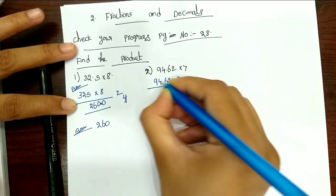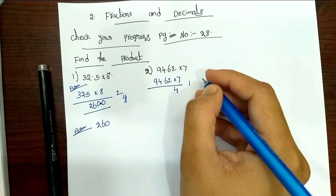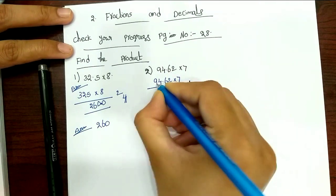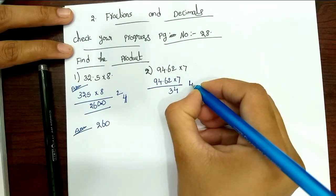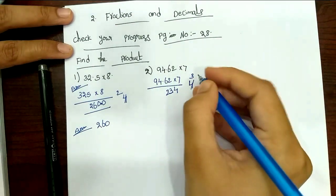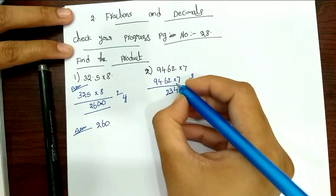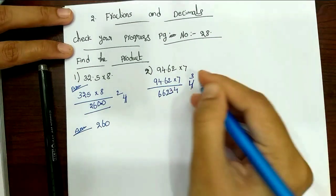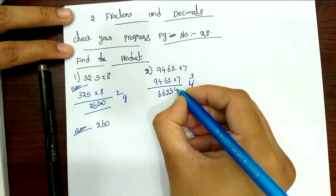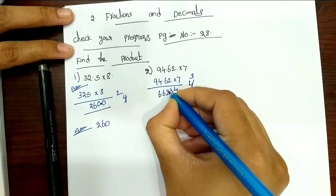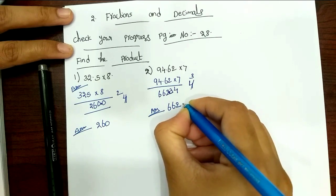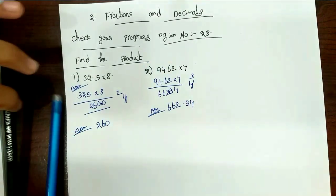7 times 2 is 14. 76.42, 42 plus 1 is 43. Next, 4 times 7 is 28, 28 plus 4 is 32. Next, 7 times 9 is 63, 63 plus 3 is 66. Now, point here — two digits before the point. You can put the point two digits before. And the answer is 662.34. Okay?